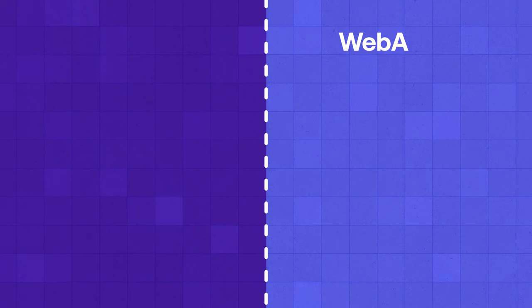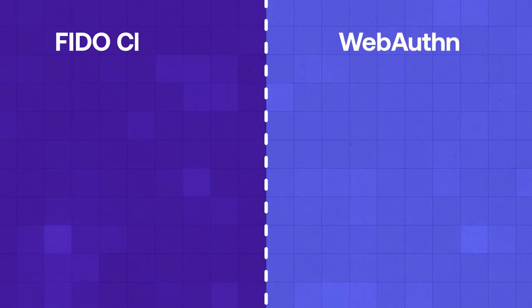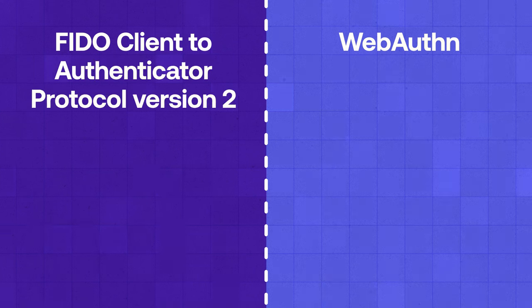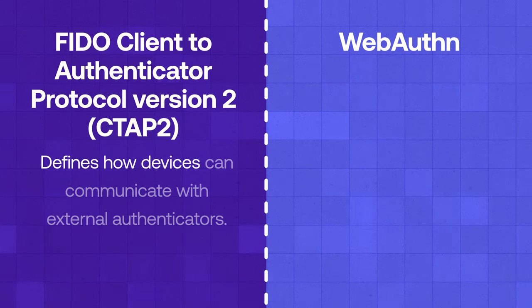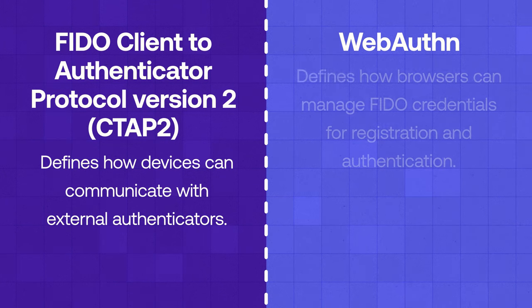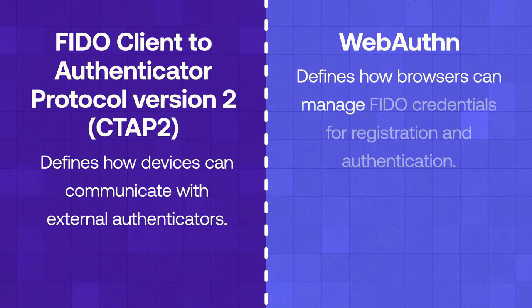Passkeys rely on FIDO2 authentication, which is composed of two standards: the WebAuthn specification and the Client to Authenticator Protocol, or CTAP2. While CTAP2 defines how devices can communicate with external authenticators, WebAuthn defines how browsers can manage FIDO credentials for registration and authentication.